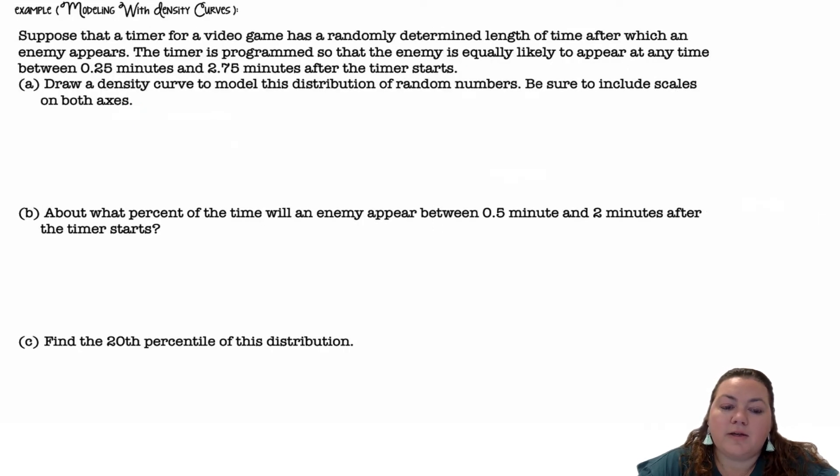Modeling with density curves. Suppose that a timer for a video game has a randomly determined length of time after which an enemy appears. The timer is programmed so that the enemy is equally likely to appear at any time between 0.25 minutes and 2.75 minutes after the timer starts. Draw a density curve to model the distribution of random numbers. Be sure to include scales on both axes. So we're going to go from 0 minutes to 3 minutes counting by quarters. This will be the length of time for the enemy to appear in minutes.